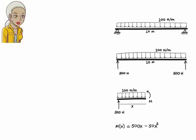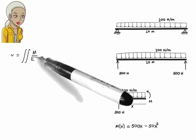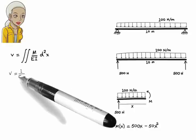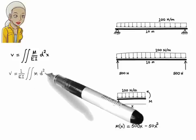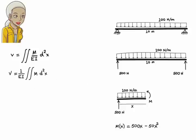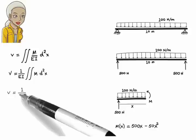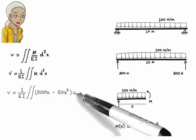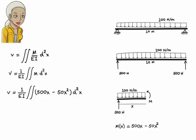We know that deflection equals the double integral of m over ei. Since the product ei is constant, we can write, v equals 1 over ei times double integral of 500x minus 50x squared.